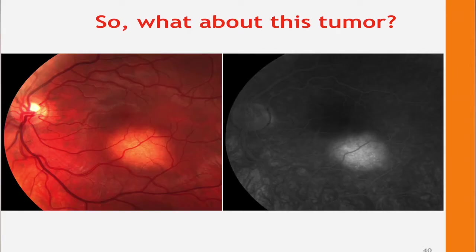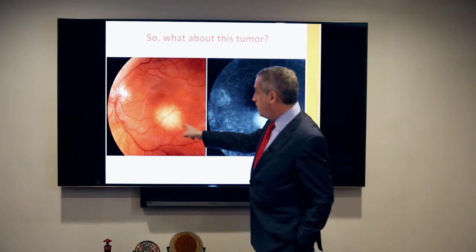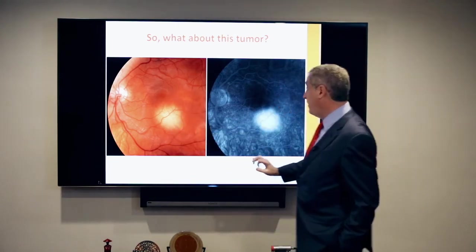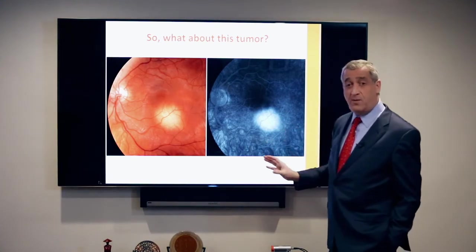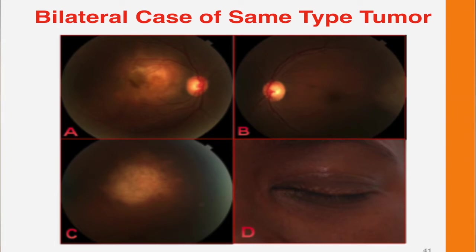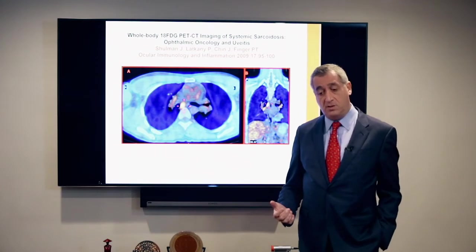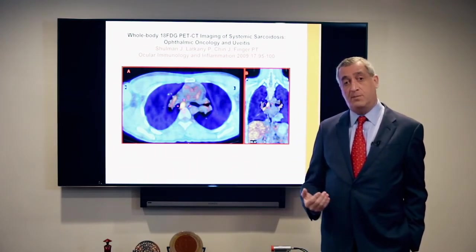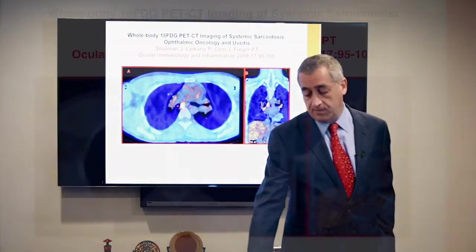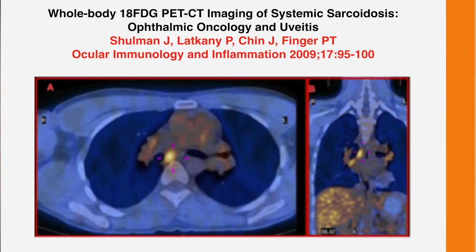Here's an interesting case — a blonde tumor with poor margins, no pigment on the surface, maybe a few microaneurysms but nothing to write home about. This patient had a blonde, variably pigmented tumor that even had an eyelid lesion. We did a PET-CT and found they had sarcoidosis. Sometimes even a diagnosis of a benign condition can be helpful in differentiating a metastatic lesion from something else. This work was published by Dr. Shulman and myself.